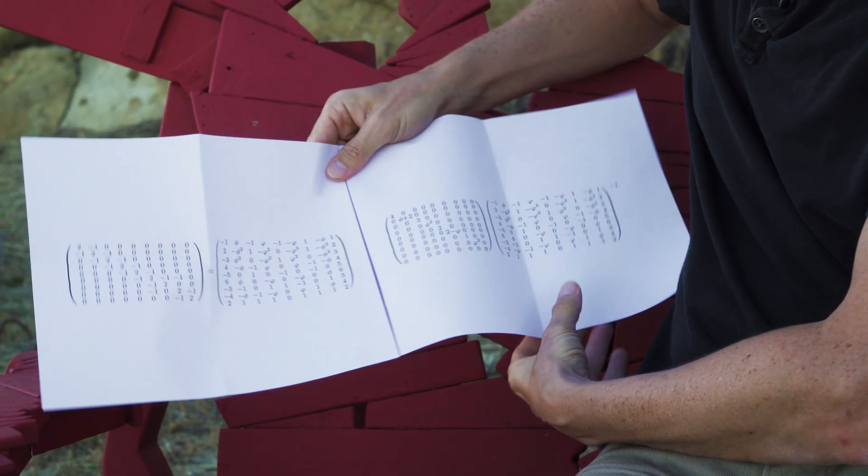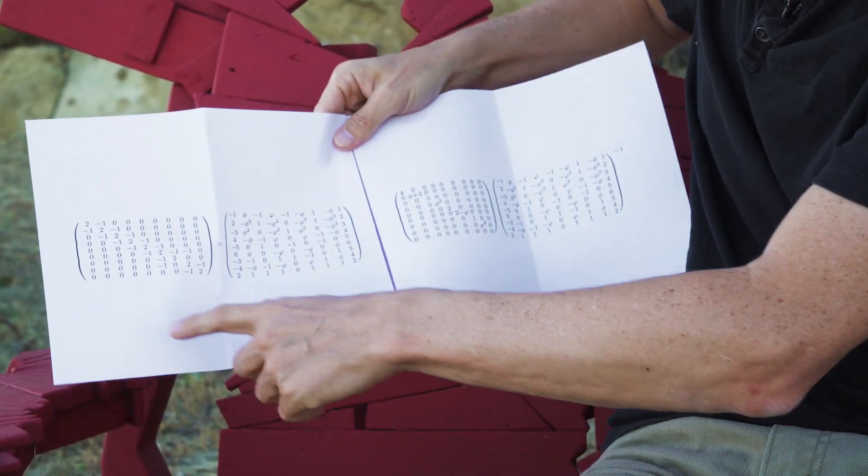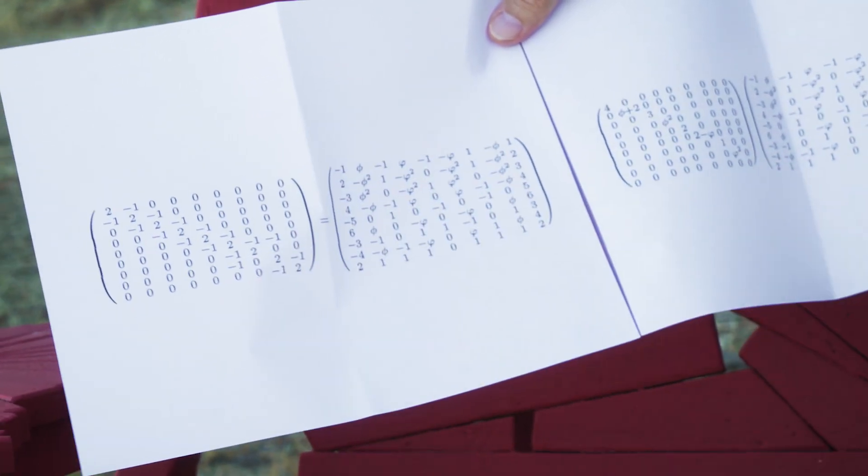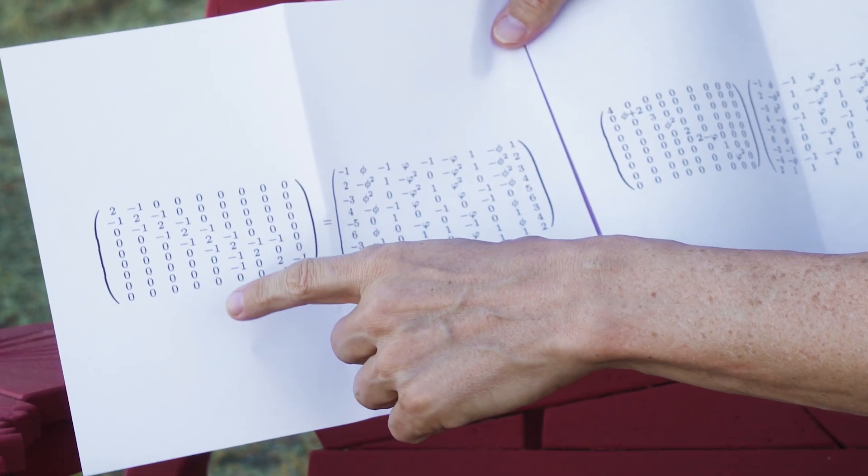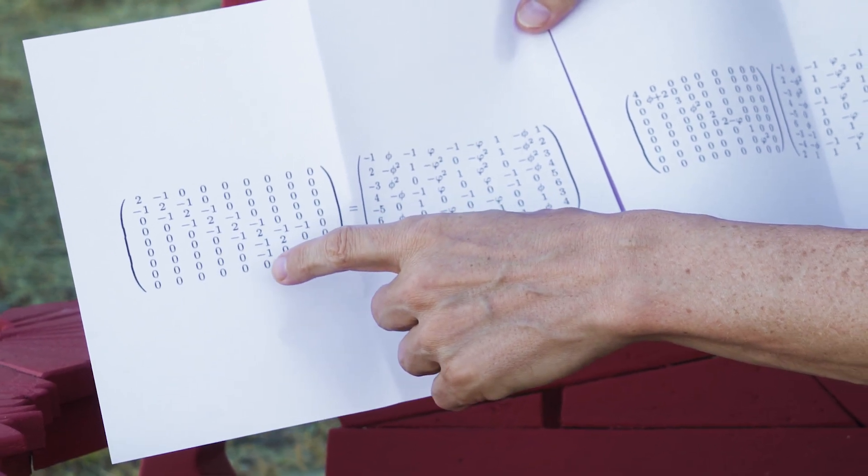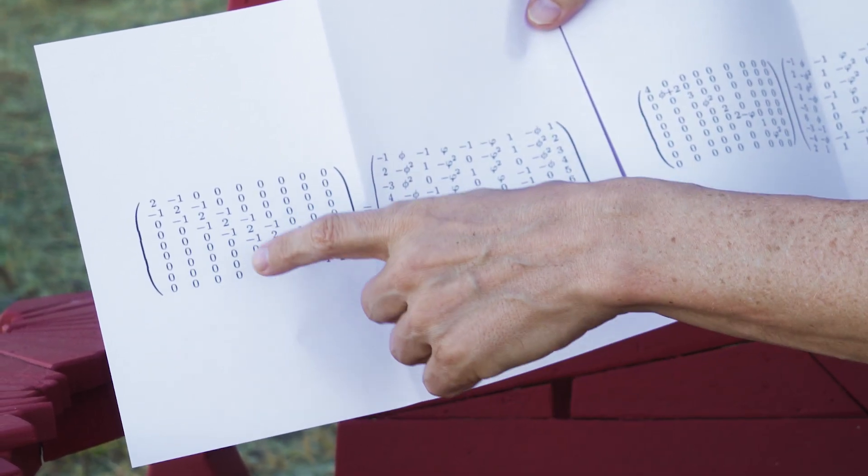So this is an equation between four matrices which are 9 by 9 tables of numbers. This matrix is very important. The specialists recognize that this is a Cartan matrix and this is the Cartan matrix of the E8 lattice.